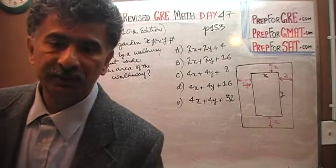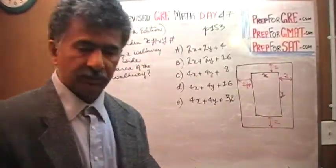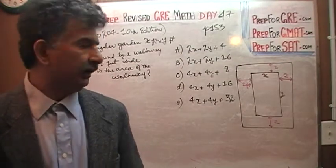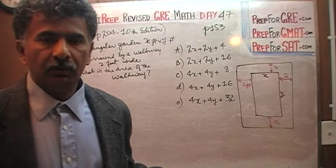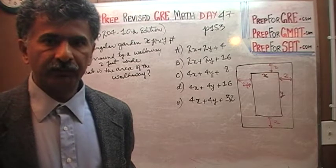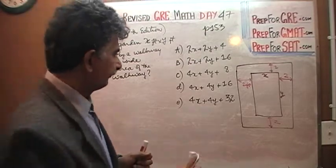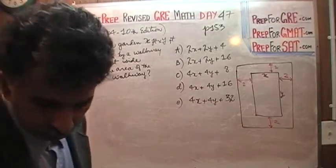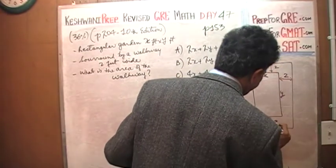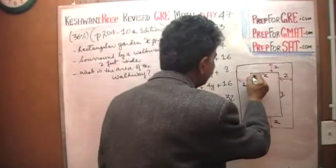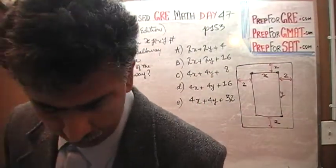This is very similar to the question we did yesterday. The only difference is that yesterday's question was classified as medium because we were dealing with concrete numbers — dimensions 12 by 18. Here, instead of 12 by 18, they give you variables x and y, but the concept does not change. Pause the video, do the problem yourself, then resume and compare your work with mine. We have a border two feet wide all the way around; from here to here is x feet, from here to here is y feet.